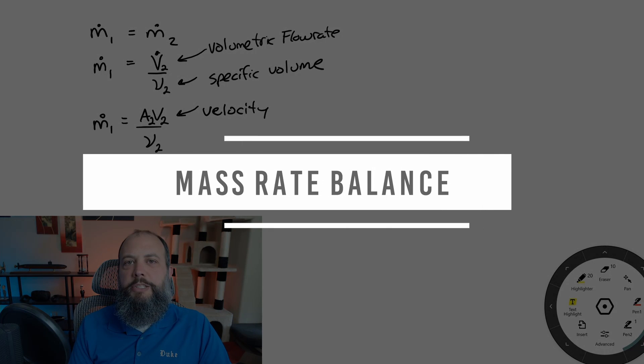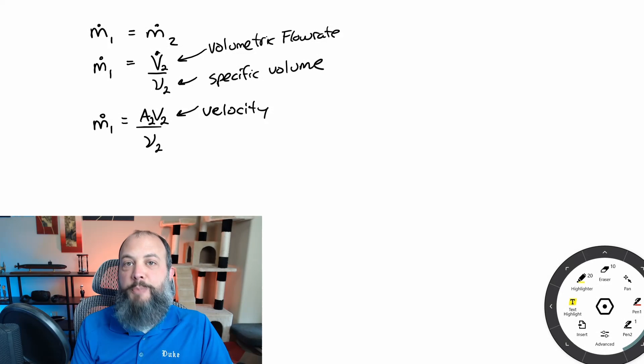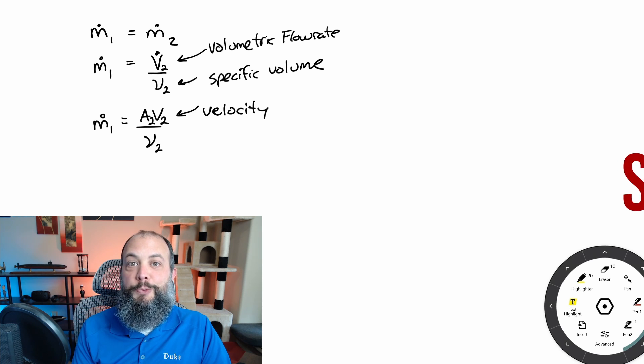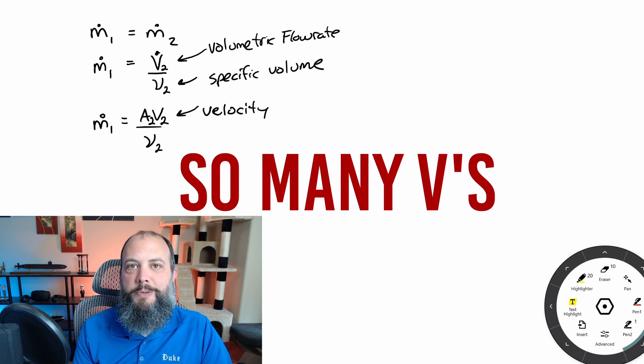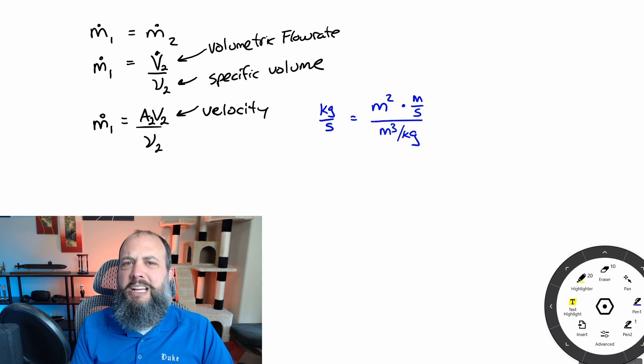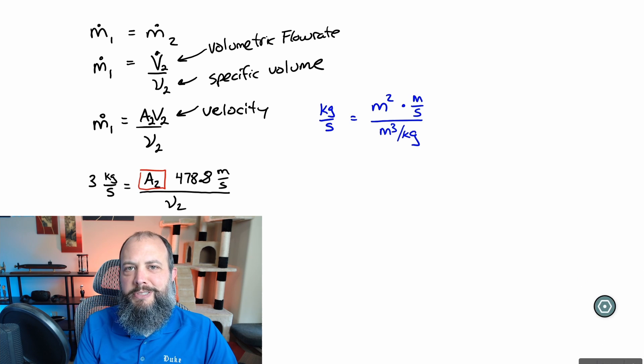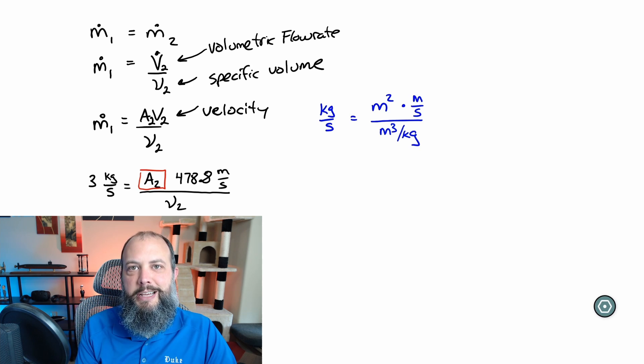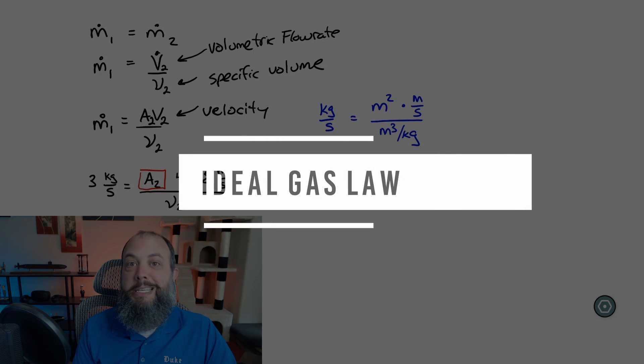For the mass rate balance for a single inlet, a single outlet means mass flow rate one has to equal mass flow rate two. Mass flow rate is equal to volumetric flow rate divided by specific volume. And volumetric flow rate is cross-sectional area times velocity. So writing out the units, just to double check that this equation works, we've got kilograms per second on the left, and the right-hand side will also simplify out to kilograms per second. So that's a good sign. So I've plugged in the numbers that are known. Circle in red, what we're trying to find is a final answer, which means if I can find specific volume at state two, that's going to get us to the end.